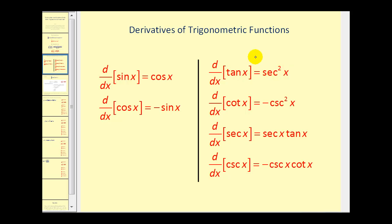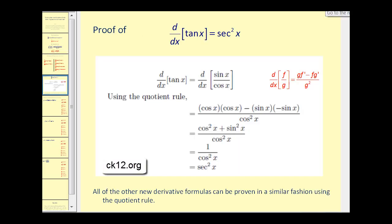Let's take a look at the proof of the derivative of tangent x. We can rewrite tangent x as sine x divided by cosine x, and in this form we can apply the quotient rule. Doing that, we get cosine² x + sine² x all over cosine² x. Since cosine² x + sine² x = 1, and 1 over cosine² x = secant² x, we arrive at the result. We could also prove the rest of the new derivative formulas using the quotient rule.